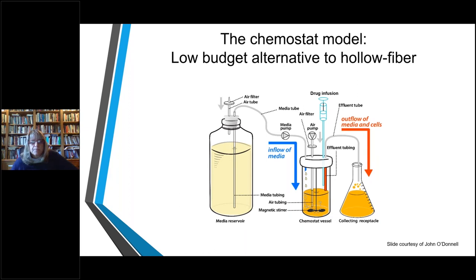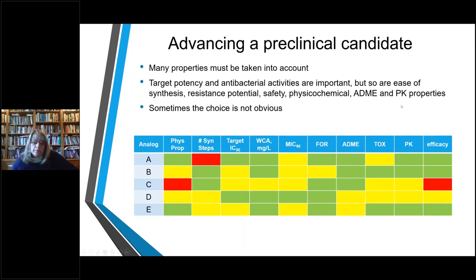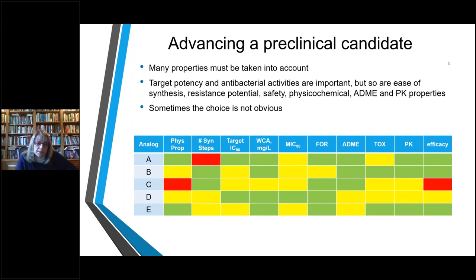Advancing a preclinical candidate can be very complex. Many properties must be taken into account beyond target potency and antibacterial activity. Equally important are ease of synthesis, resistance potential, safety, physical-chemical, ADME, and PK properties. Sometimes the choice is not obvious. Hopefully if you have multiple series, you'll be able to advance to the point where you are ready to move from lead optimization to the next stage. I will hand it over to Patricia.